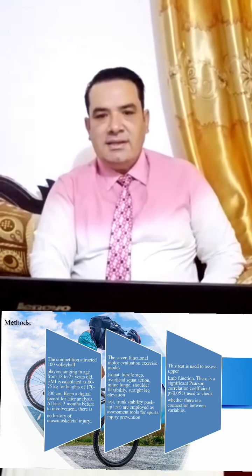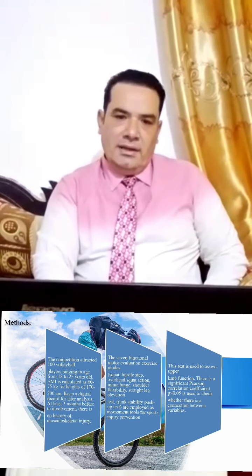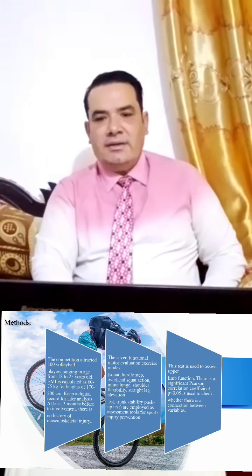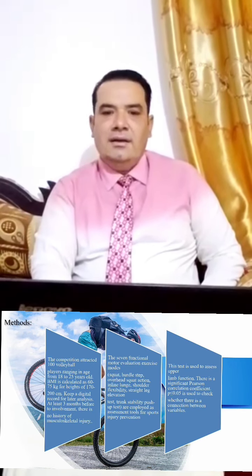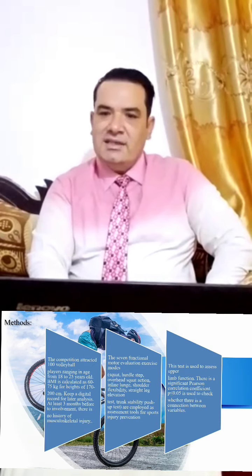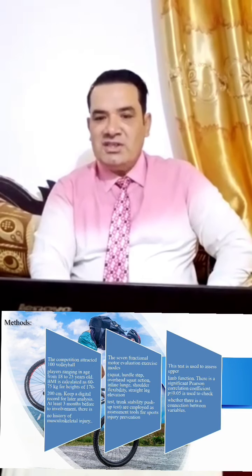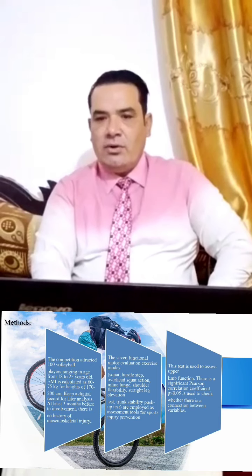The seven functional movement screen tests used were: deep squat, hurdle step, in-line lunge, shoulder flexibility, straight leg raise, and push-up. All these functional movement tests were used in this study. The tests are used to assess upper limb function.